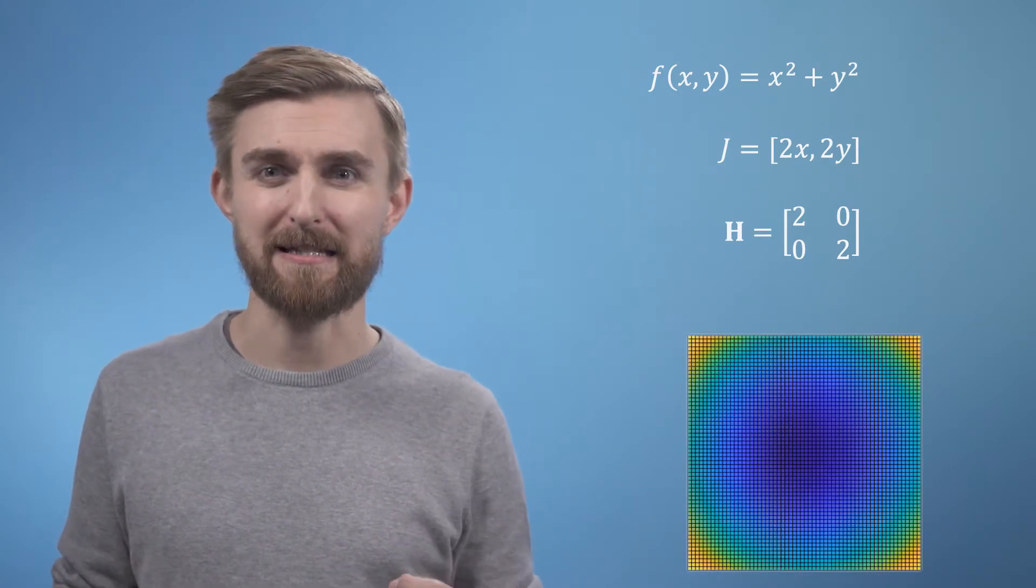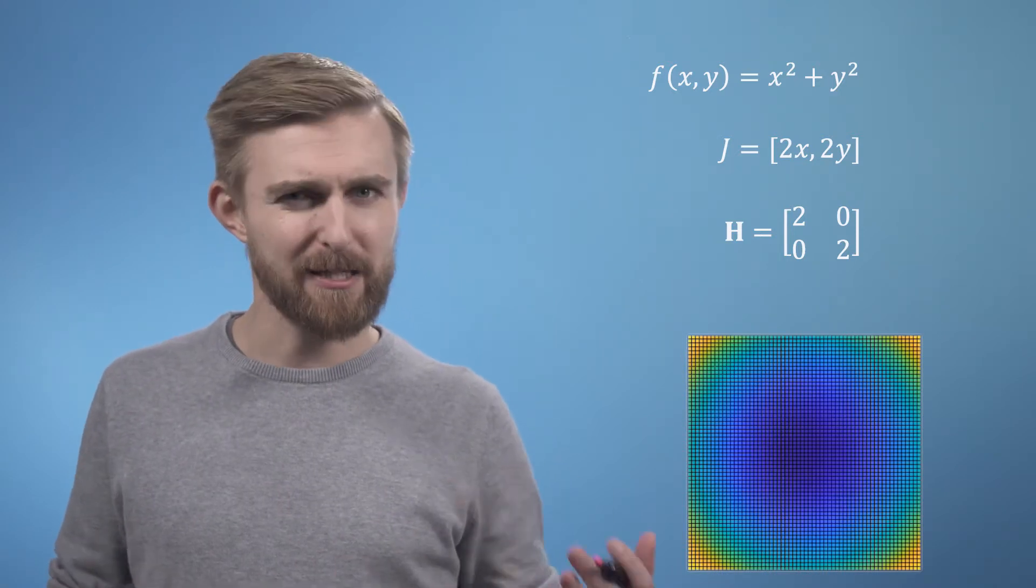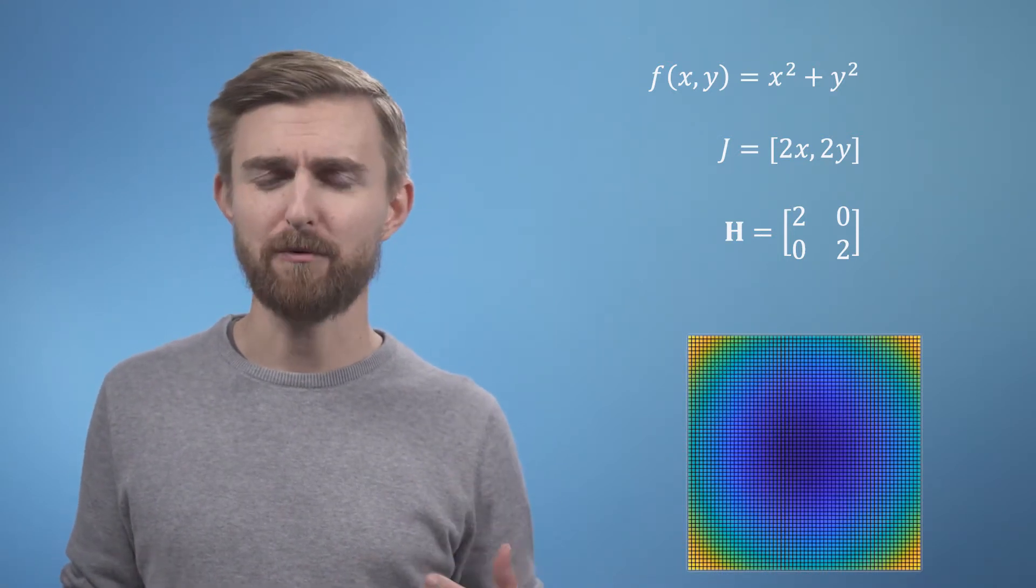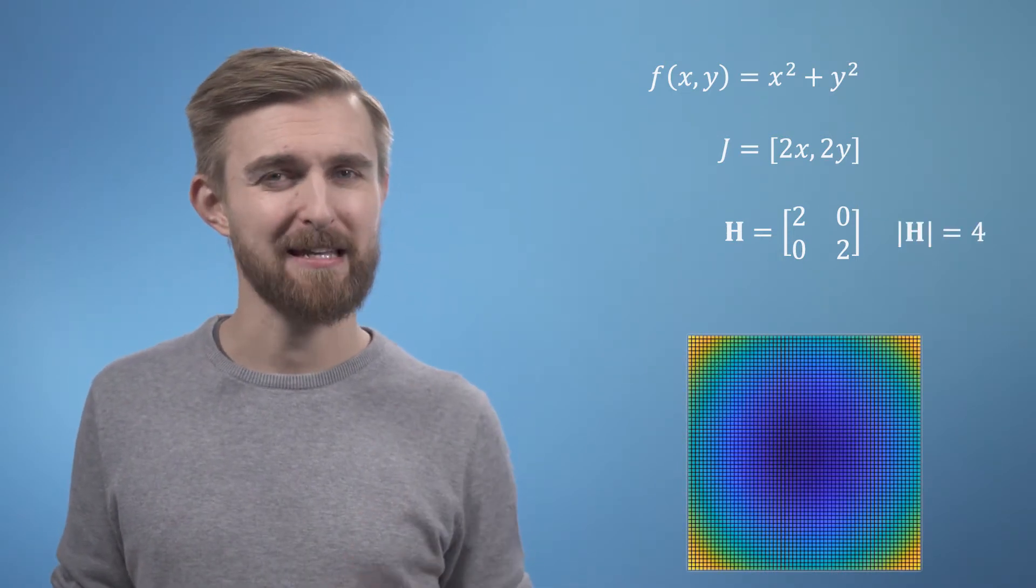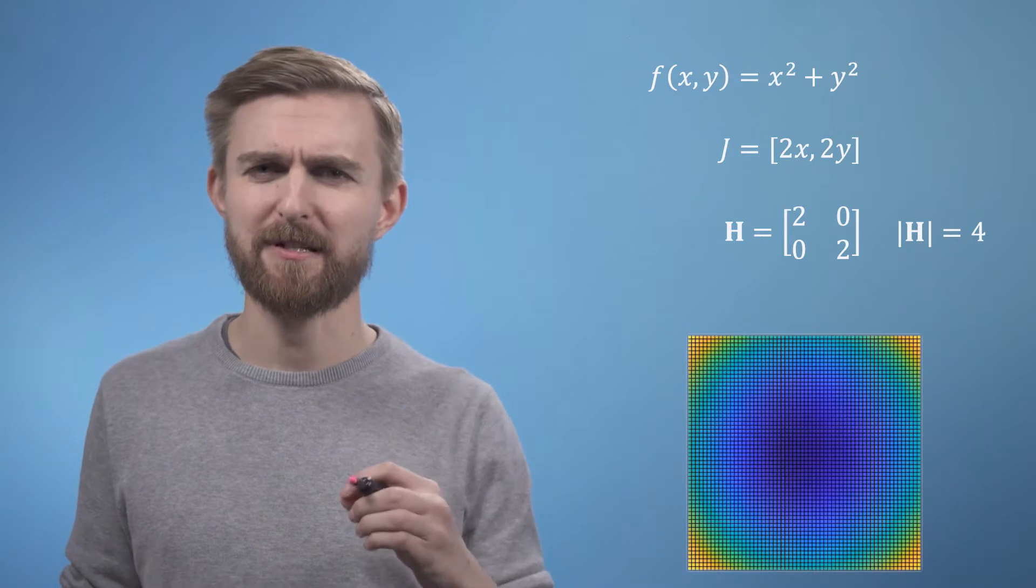Instead, we can look at the Hessian, which in this simple case is no longer even a function of x or y. Its determinant is clearly just 2 times 2 minus 0 times 0, which is 4. The power of the Hessian is, firstly, that if its determinant is positive,